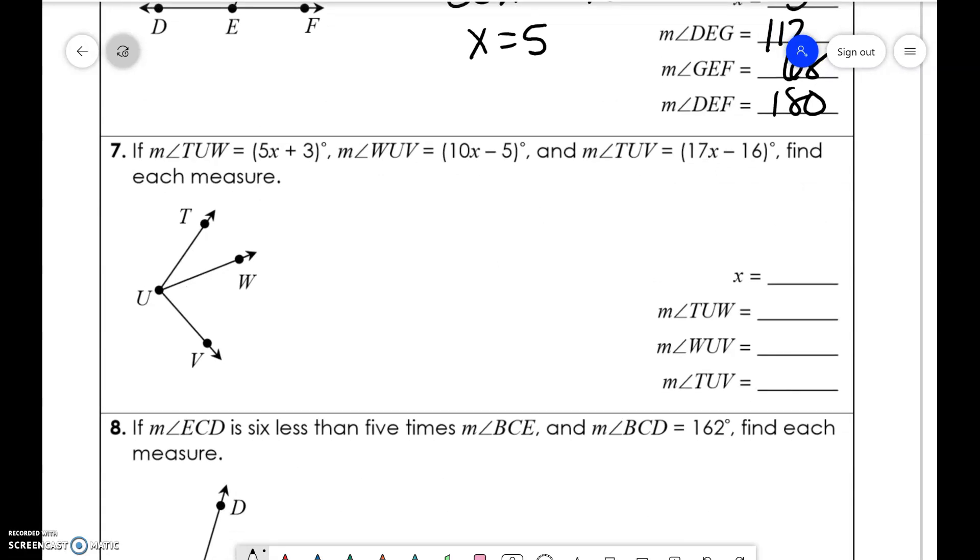TUW, 5x plus 3. WUV, 10x minus 5. And TVU, so the whole thing here is 17x minus 16.